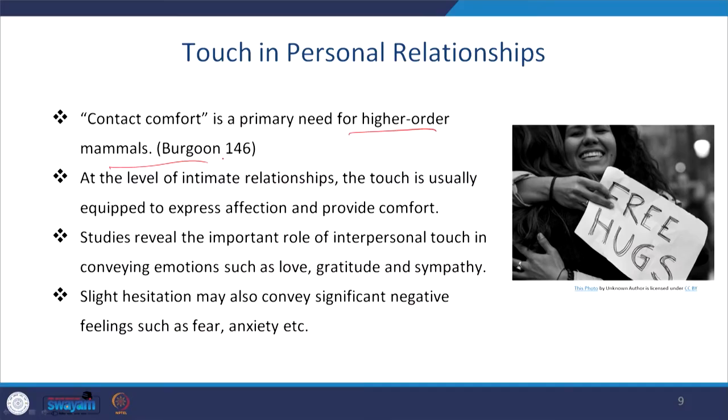Touch also matters in personal relationships. An American professor of communication calls it 'contact comfort' — it is a primary need for higher-order mammals. At the level of intimate relationships, touch is usually used to express affection and provide comfort. When a mother touches a child, it conveys warmth and reassurance. Studies reveal the important role of interpersonal touch in conveying emotions such as love, gratitude, and sympathy.